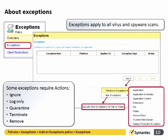Under the exceptions we can now start to add in the exceptions that we wish to make. In the main box we choose Add and select either Windows exceptions or Mac exceptions. The Windows exceptions list is much longer than the Mac's — the Mac can only set certain extension exceptions or risk exceptions for files or folders.